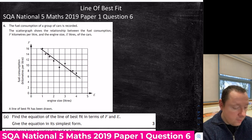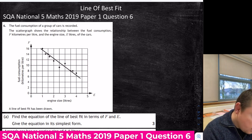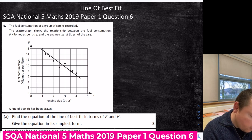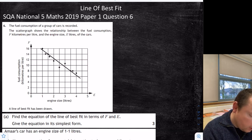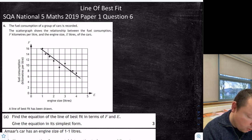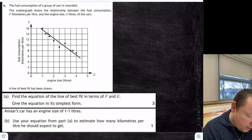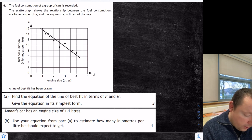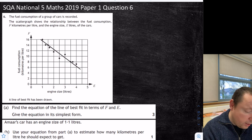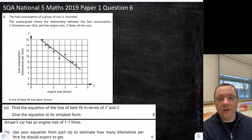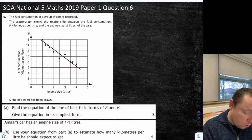Line of best fit — SQA National 5 Maths 2019 Paper 1 Question 6. The fuel consumption of a group of cars is recorded. The scatter graph shows the relationship between fuel consumption F on the y-axis in kilometres per litre and engine size E in litres. The line of best fit is drawn. Find the equation of the line of best fit in terms of F and E in simplest form. We need two points — and since none are given, we need to go to the graph and find them ourselves. Look for points you can read clearly.